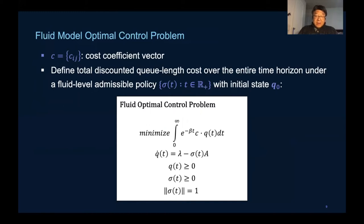To ensure the finiteness of this value, the objective is discounted, and C_ij here represents the cost associated with input port i and output port j.